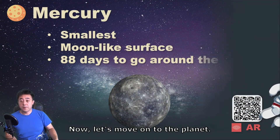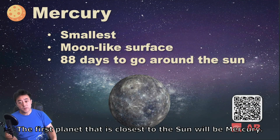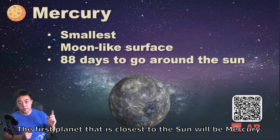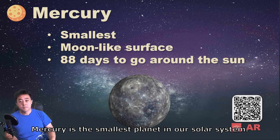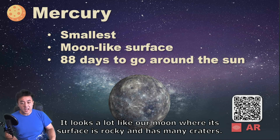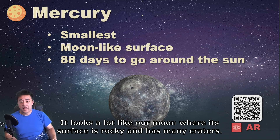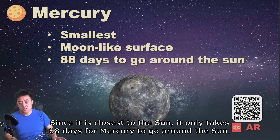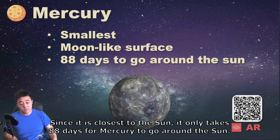Now let's move on to the planets. The first planet closest to the sun is Mercury. Mercury is the smallest planet in our solar system. It looks a lot like our moon — its surface is rocky and has many craters. Since it is closest to the sun, it only takes 88 days for Mercury to go around the sun.